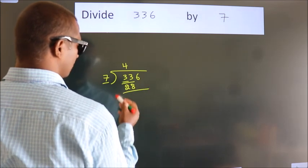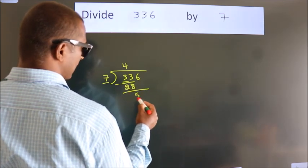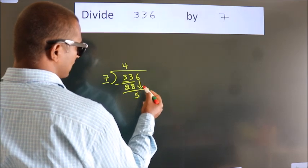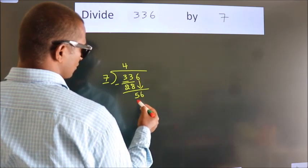Now we should subtract. We get 5. After this bring down the beside number. So 6 down. So 56.